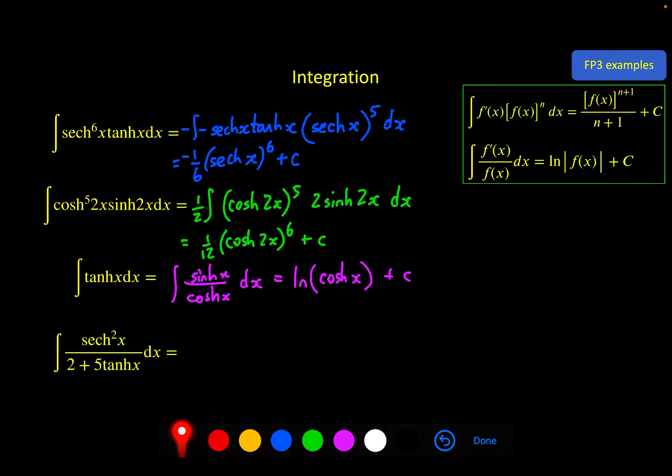And the last one also follows something very close to this, because sech squared is the derivative of tanh. And having the 2 here, if I differentiate all of this, that 2 doesn't make any difference, because a constant differentiates to 0. So I've got the log of 2 plus 5 tanh x. And if you differentiate that, you get something very close to this. The function goes on the bottom of the fraction. The derivative of the function on the top would have been 5 sech squared. But I don't have a 5 here, so I need to balance that with 1 fifth.